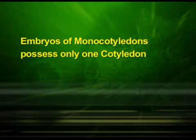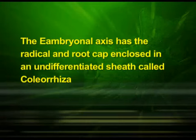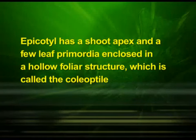Embryos of monocotyledons possess only one cotyledon. In the longitudinal section of an embryo of grass, the cotyledon is called the scutellum, situated towards the lateral side of the embryonal axis. At its lower end, the embryonal axis has the radicle and root cap enclosed in an undifferentiated sheath called coleorhiza. The portion of the embryonal axis above the level of attachment of the scutellum is the epicotyl. The epicotyl has a shoot apex and a few leaf primordia enclosed in a hollow foliar structure called the coleoptile.